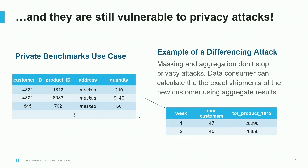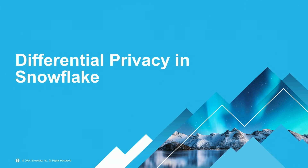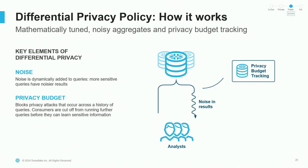So what is the solution? Differential privacy is the solution. Now that we've seen this motivating use case, let's get into what differential privacy is and how it would solve the utility and privacy problems. Differential privacy in Snowflake is built as a policy — similar to masking policies or access policies, built on the same framework. There are two key mechanisms that underpin differential privacy. The first is noise, and the second is privacy budget.